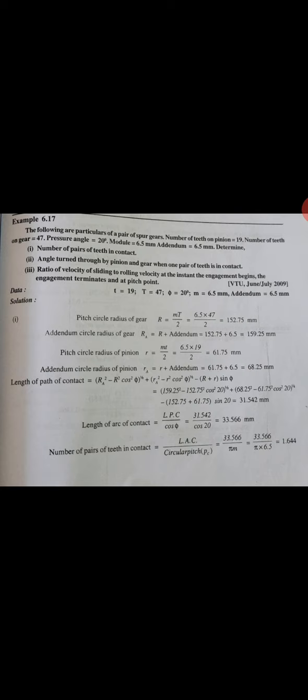Pitch circle radius of gear is m*T/2, that is 152.75. Radius of gear is R_a = R + addendum, that is 159.25. Pitch circle radius of pinion, small r, is m*t/2, that is 51.75. Radius of pinion is r_a = r + addendum = 68.25.